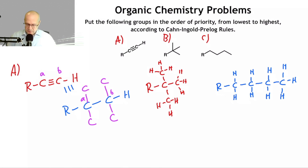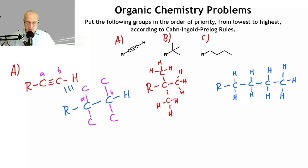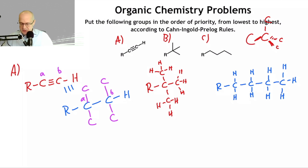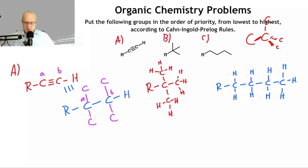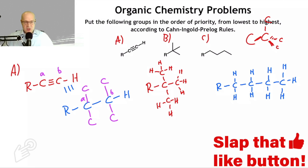Remember, R is the chiral center. Cahn-Ingold and Prelog say that when assigning priority you start at the chiral center and jump out one atom in all directions. You have a tetrahedral carbon and jump out to all the atoms it's attached to. So starting at R, jumping out in all directions, we get carbon, carbon, and carbon — that's a tie. Everyone is carbon, so that's a tie.